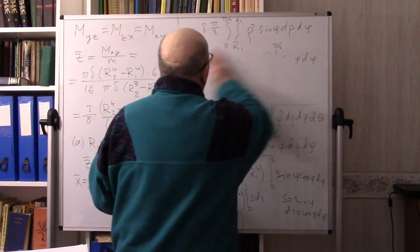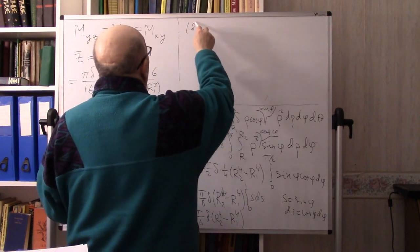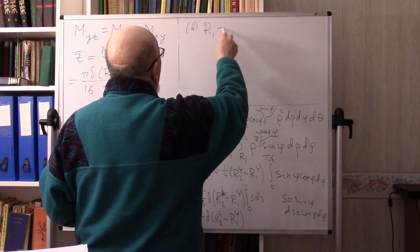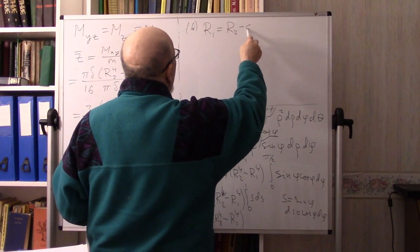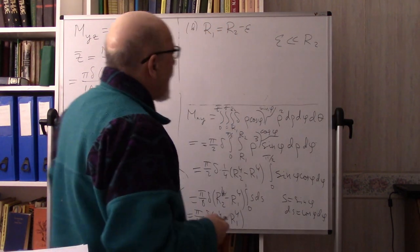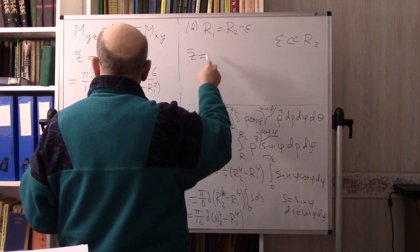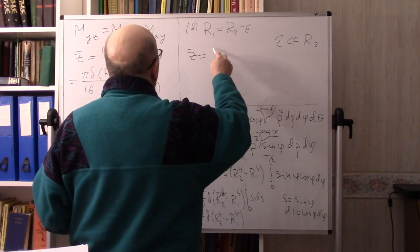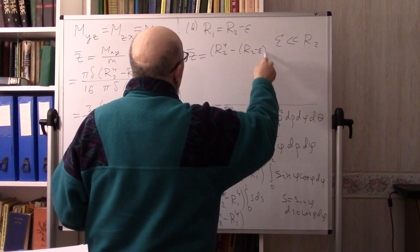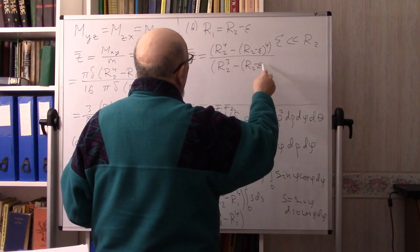The second extreme case is a very thin shell, namely R₁ = R₂ − ε where ε is very small, much smaller than R₂. Where is the center of mass in this case? z̄ equals (3/8) times [R₂⁴ − (R₂−ε)⁴] divided by [R₂³ − (R₂−ε)³].